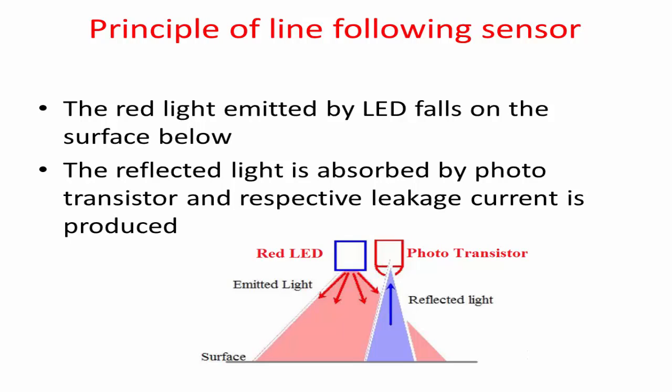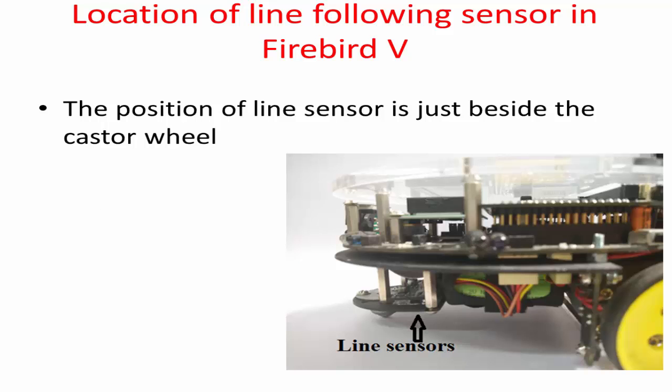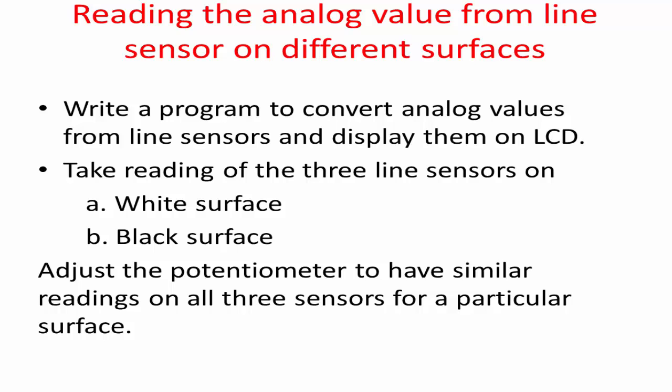Hence, there is a high analog voltage on a white surface and a low analog voltage on a black surface. The analog voltage from the line sensor varies from 0 to 5 volts. The position of the sensor is just beside the caster wheel, as shown in the figure.